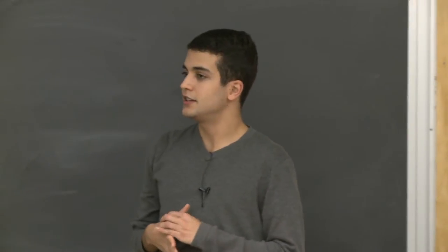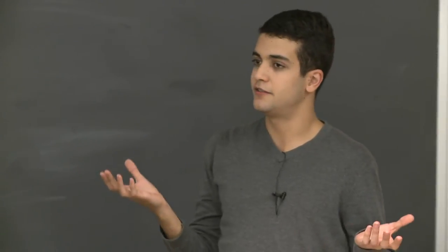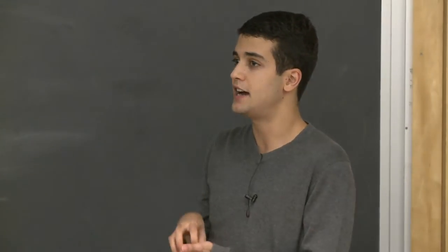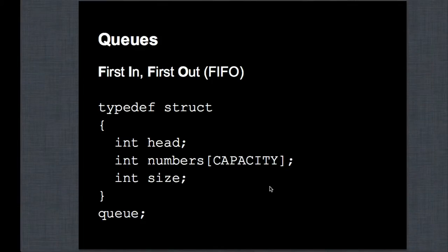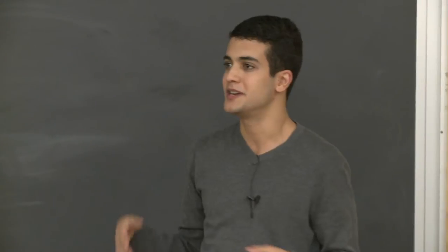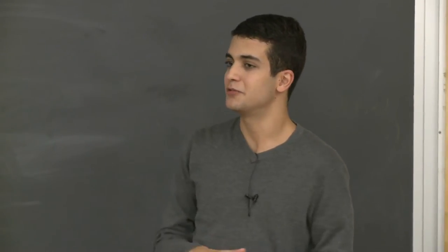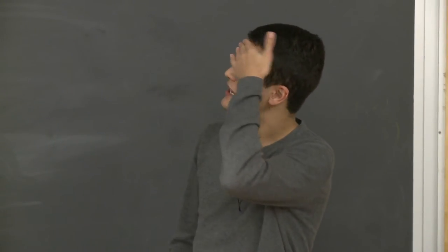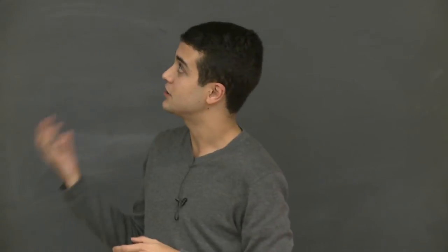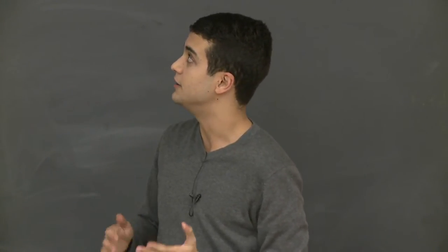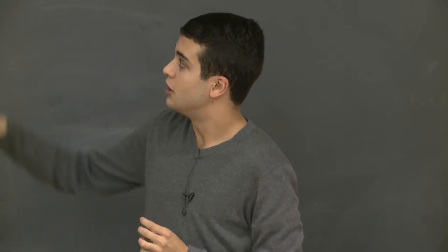Now queues. Queues are pretty much the same thing as stacks. The only difference is that instead of last in, first out, you have first in, first out. If you're waiting in line for a concert, you wouldn't be happy if it were a stack — the last person to arrive would be the first to enter. In a queue, the first person in is also the first person out. Besides size and the array, the queue struct also needs a head, which is the index of the first element.